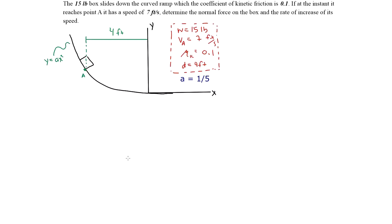Welcome back everybody. Today we'll be looking at another dynamics problem. The problem states that the 15-pound box slides down a curved ramp with a coefficient of kinetic friction of 0.1. At the instant it reaches point A it has a speed of 7 feet per second. Determine the normal force on the box and the rate of increase of its speed.